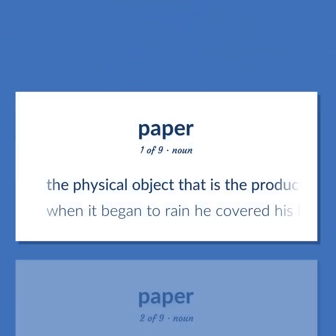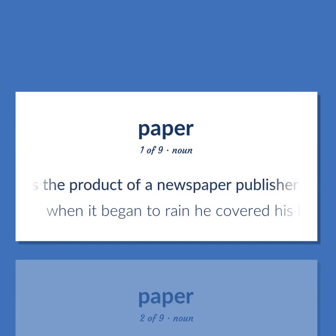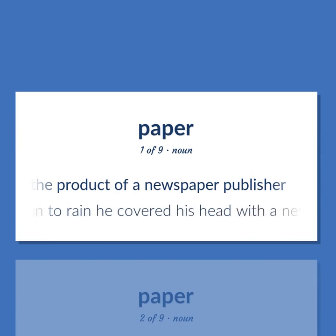Newspaper (noun): The physical object that is the product of a newspaper publisher. Example: When it began to rain, he covered his head with a newspaper.